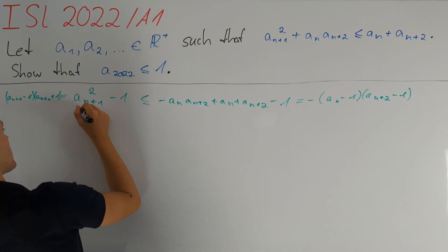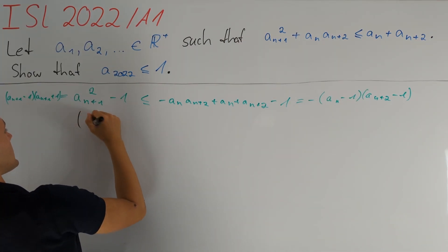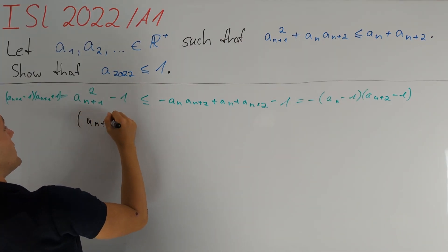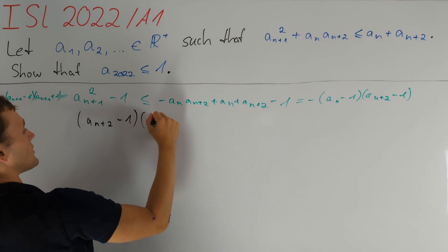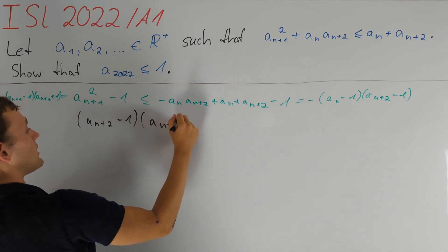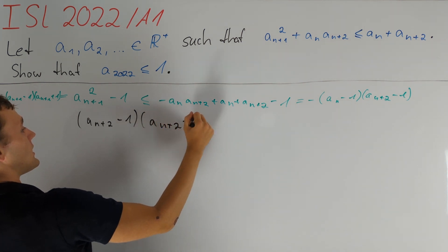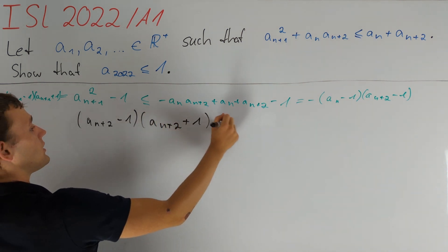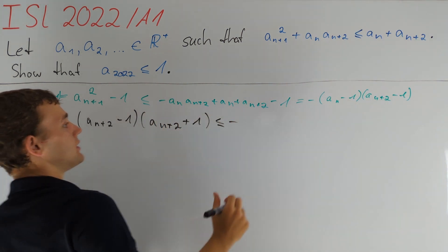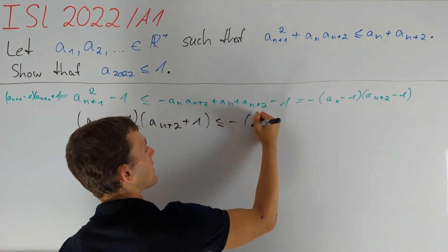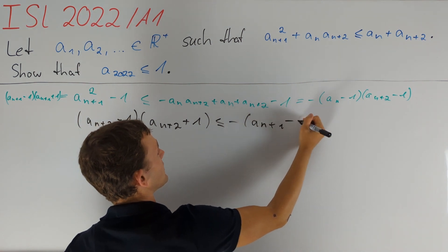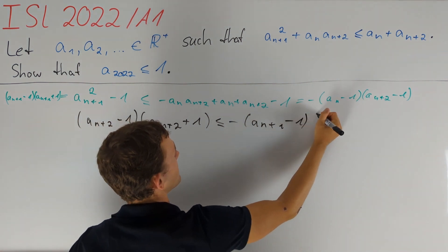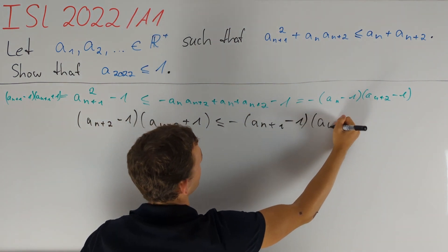So let's write down that shifted inequality: (aₙ₊₂ minus one)(aₙ₊₂ plus one) is less than or equal to minus (aₙ₊₁ minus one)(aₙ₊₃ minus one).